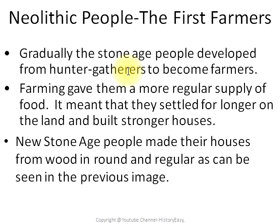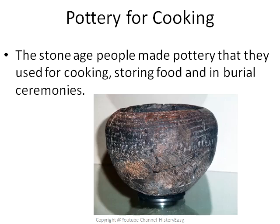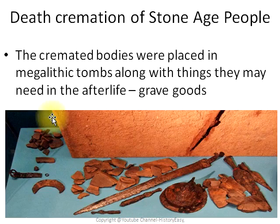Farming gave these people a more regular supply of food. It meant that they settled for longer on the land and built stronger houses. New Stone Age people made their houses from wood in round and regular shapes. They also developed pottery for cooking, as you can see.